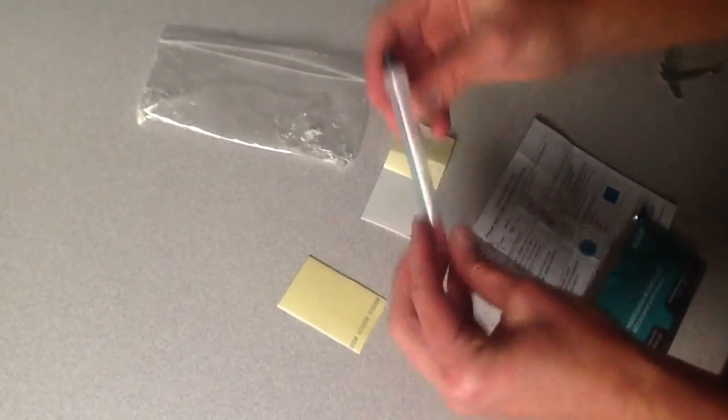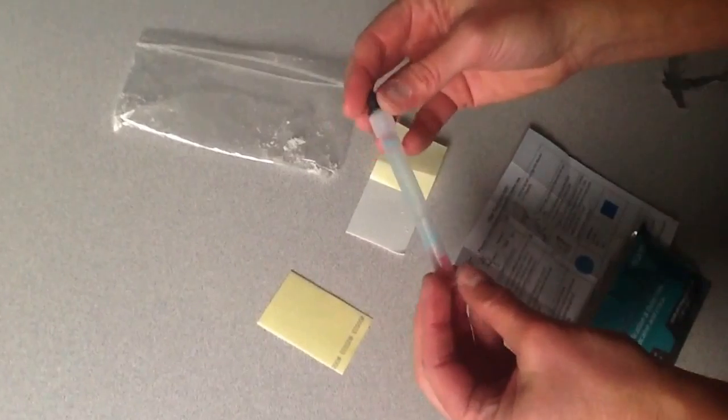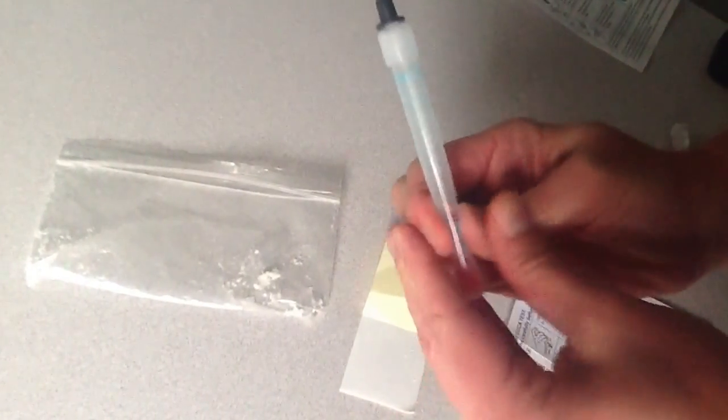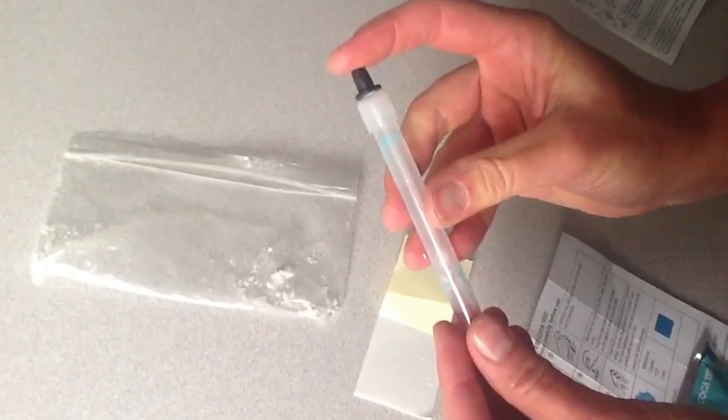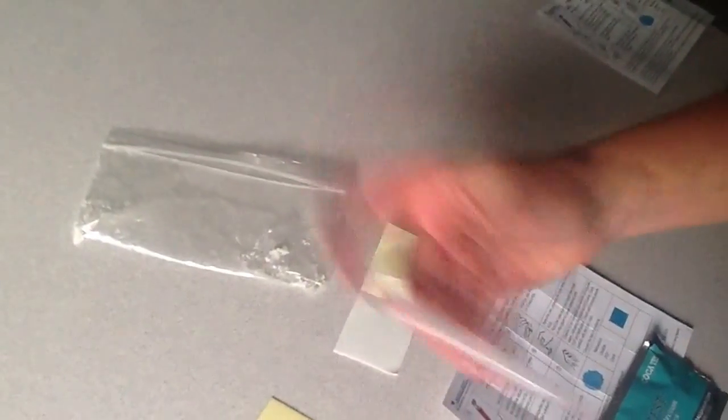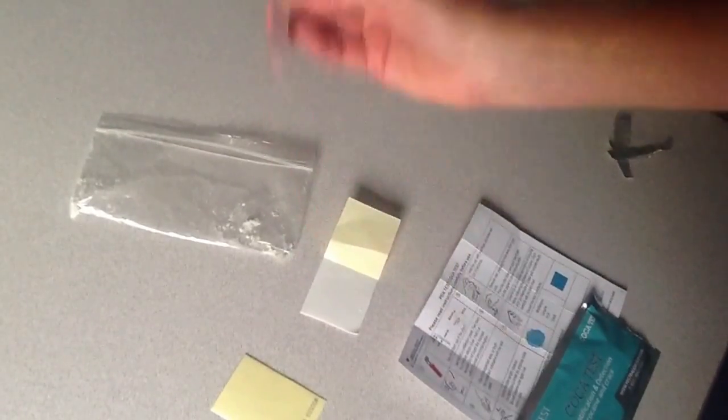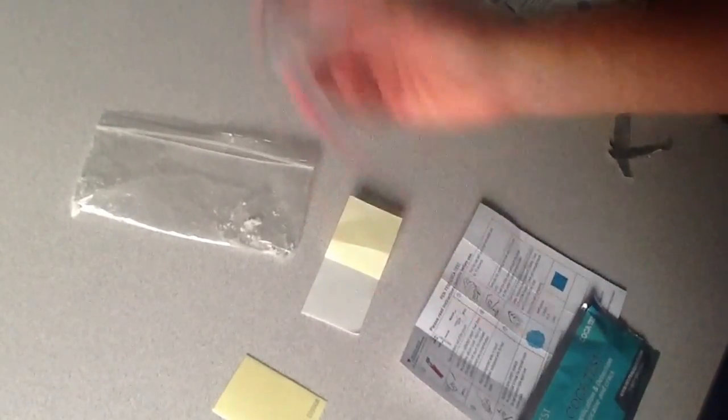Then set your collection paper down and take the pen. Hold the tube upright and squeeze the plastic tube to break the ampoule inside to release the test fluid. Hold the cap with your finger and shake well for ten seconds. Make sure you shake it for ten seconds.